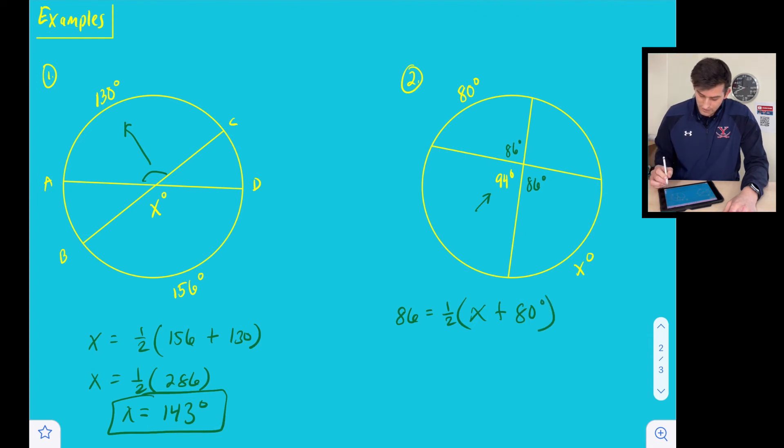So now what we're going to do is we're going to multiply both sides by two because that's going to get rid of that one half. So we can do 86 times two, and that's going to give us 172, equals X plus 80.